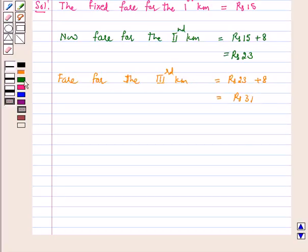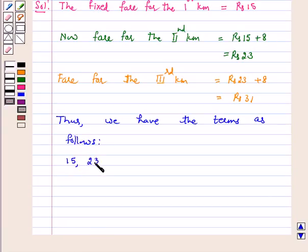Thus, we have the terms as follows. First was 15, second was 23, 31 and so on.